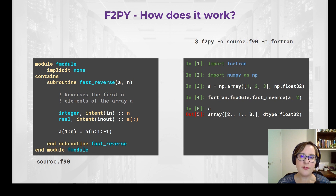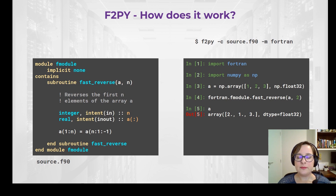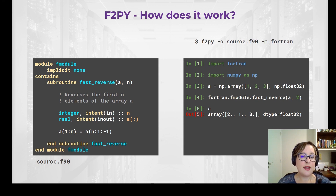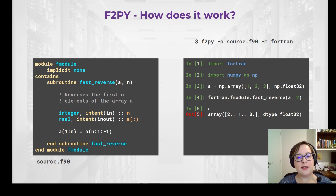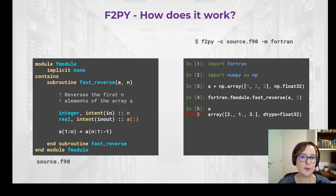How does it work? F2Py reads the Fortran source code and parses the interface of any subroutines in this module. Then it compiles all the source code and builds the extension module in C using the Python C API. This extension module containing the wrappers and the compiled Fortran routines can then be imported as any other Python module. In the example shown, I have a subroutine called Fast Reverse that aims to reverse the first N entries of an array A. You can see that this is a high-level language. Of course, there's declaration of variables, which we're not used to seeing in Python, but the array operation itself works with slicing and indices very similarly to what you would do in Python using NumPy.